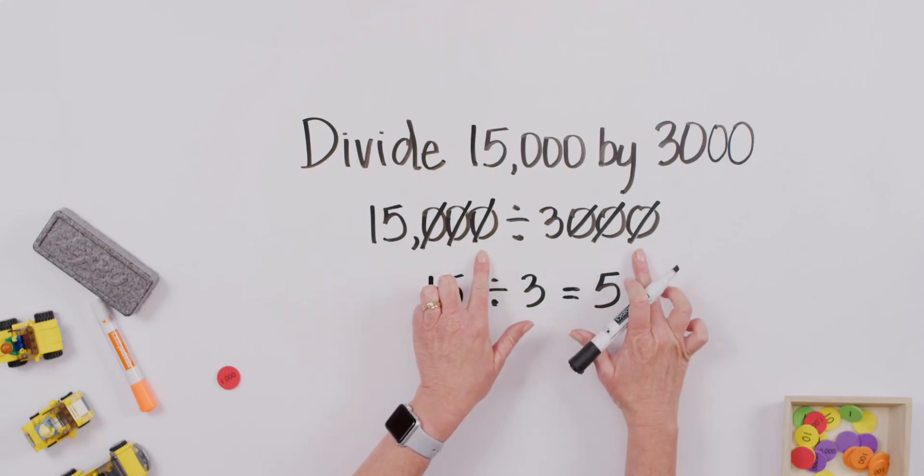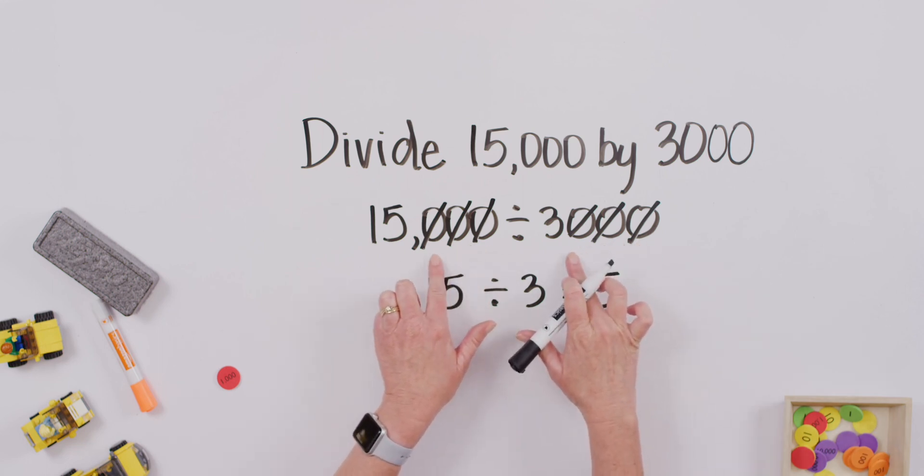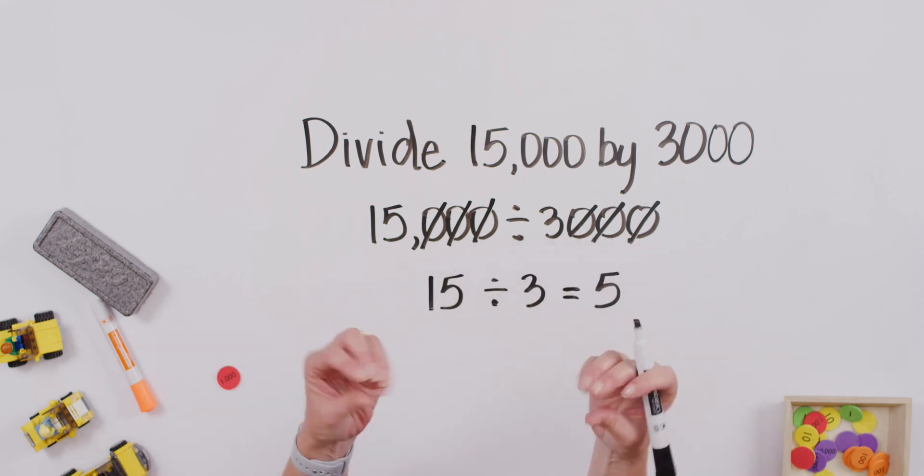Isn't that so much easier? We have now 15 divided by 3, which is 5. So, when you take those zeros off, just know you are dividing by 10, by 100, by 1,000. Each of those numbers to reduce them down, to simplify them, to make it easier to divide.